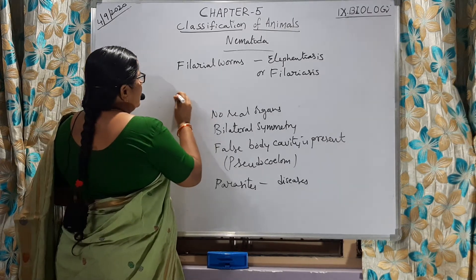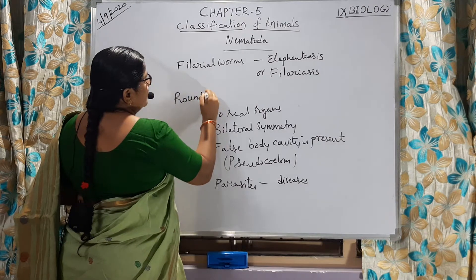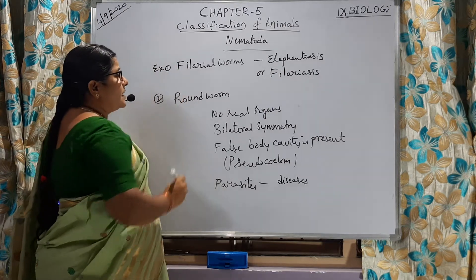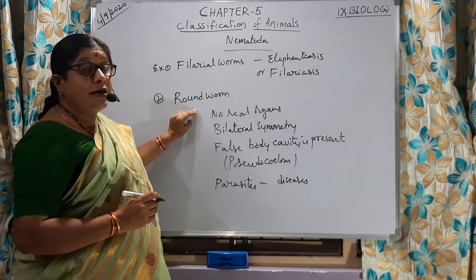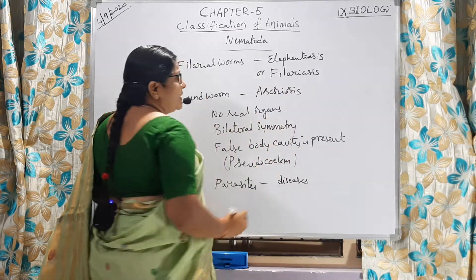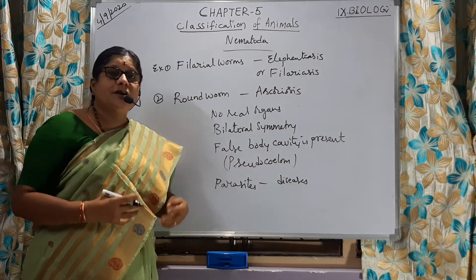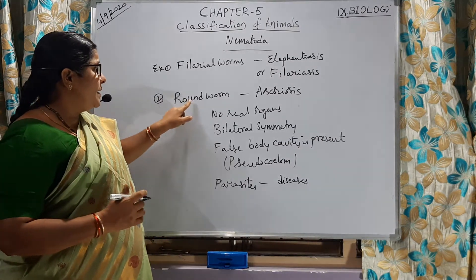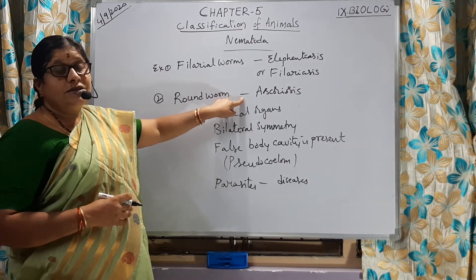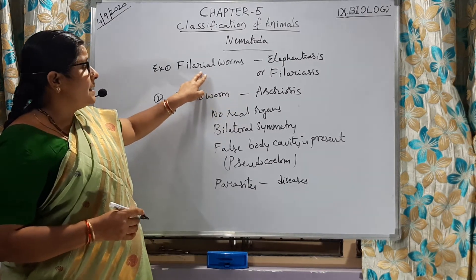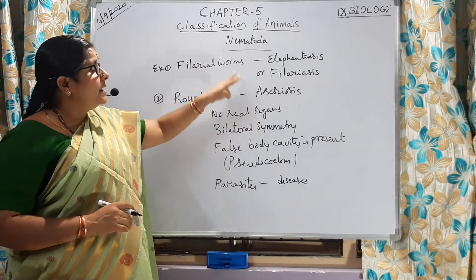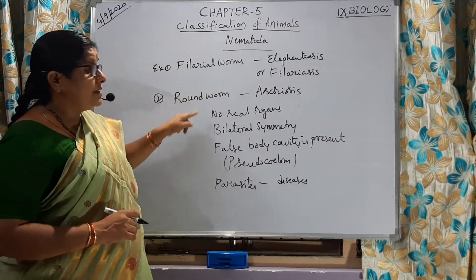Another example is the roundworm, which is also a parasite living in the intestines and causing a disease called ascariasis. What happens is severe stomach infections and stomach disorders. The worms move from the intestines all through the body, resulting in severe health problems. So, filarial worms are responsible for elephantiasis or filariasis, and roundworms cause ascariasis.